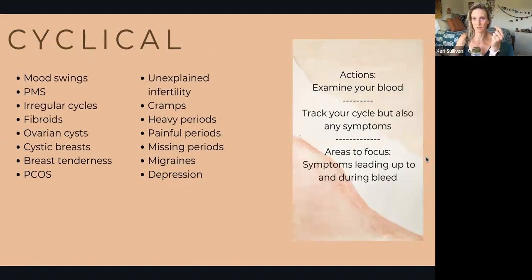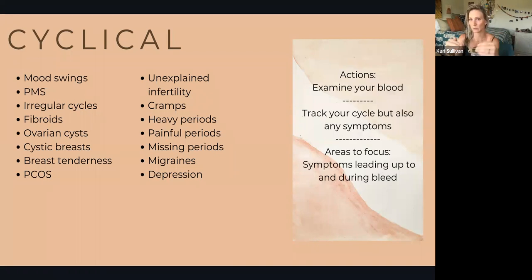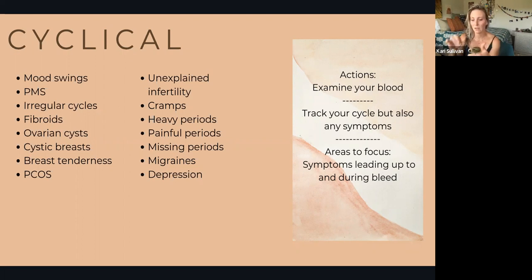Finally, cyclical symptoms — again, cultural conditioning tells us these are all normal. We know now they're not. We want to examine our blood. There's a chart coming after this lecture on what your blood is telling you specifically about progesterone and estrogen. From Week 1, you should be tracking your cycle — also track your symptoms: what does your discharge look like, when does low back pain start, when do headaches arise, when is libido thriving or chilling out.